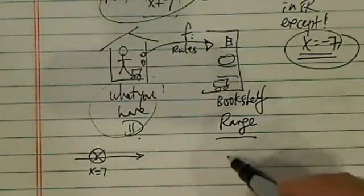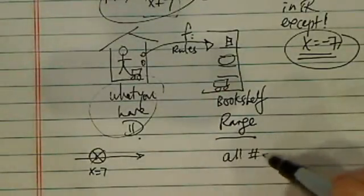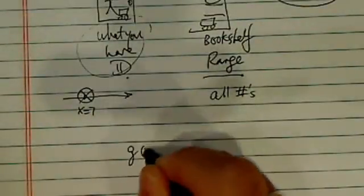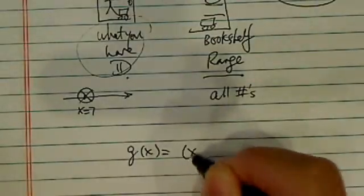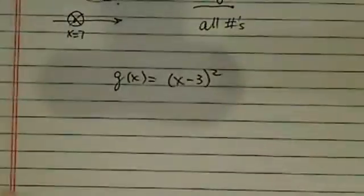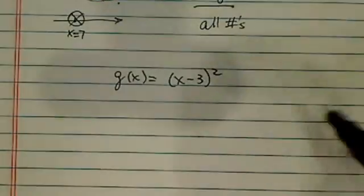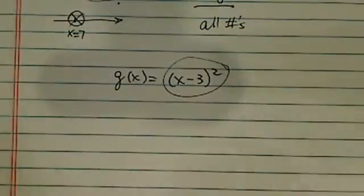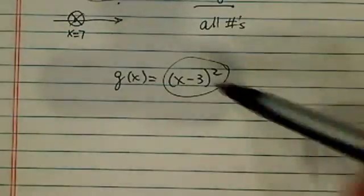On the range side, it's all numbers. Let's take a look at another one. What if I have a function g that's equal to x minus 3 and squared? So all possible x's because the square function doesn't really require anything other than any x you can put in there.